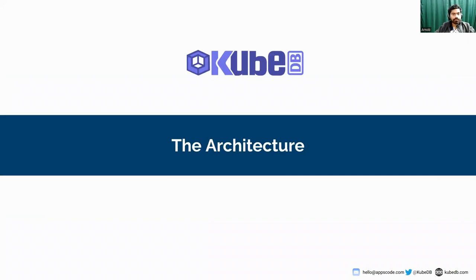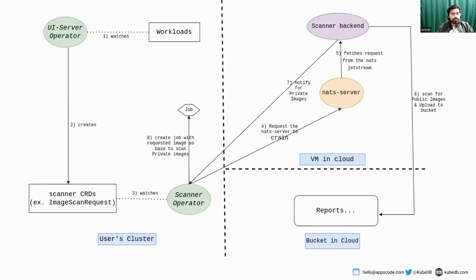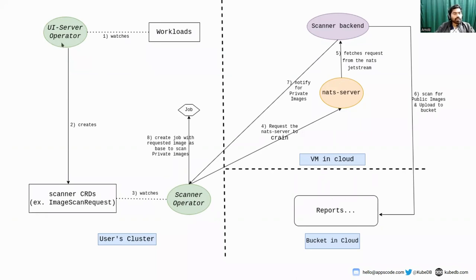Let's talk about the architecture first. Here you can see the architecture. The left-hand side is your cluster, and the right-hand side is our side — where the scanner backend is running and where the public scan reports are stored. Firstly, you have to install the UI server operator and scanner operator to your cluster. When you install the UI server operator, you may also enable Prometheus for monitoring the reports and other vulnerabilities.